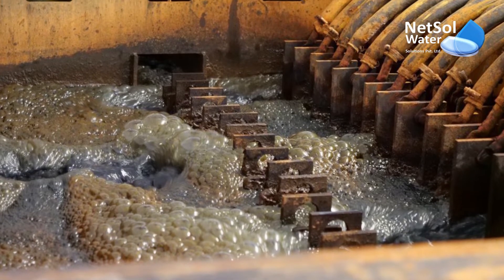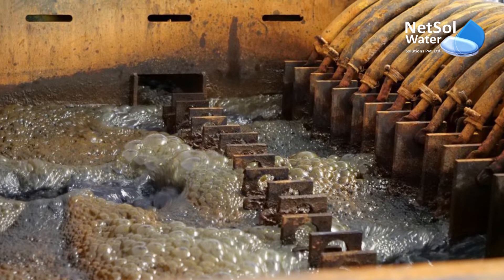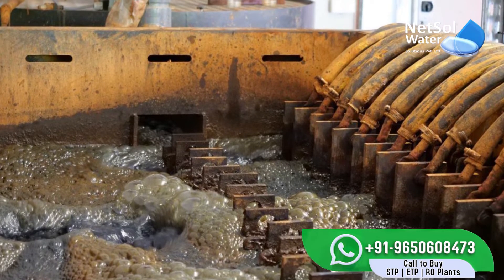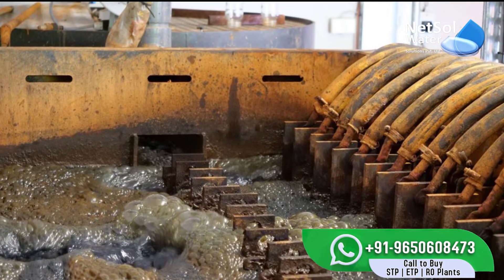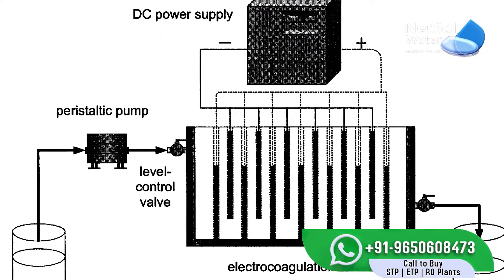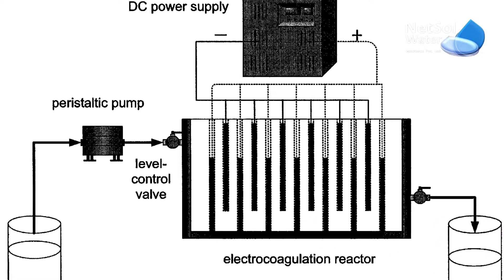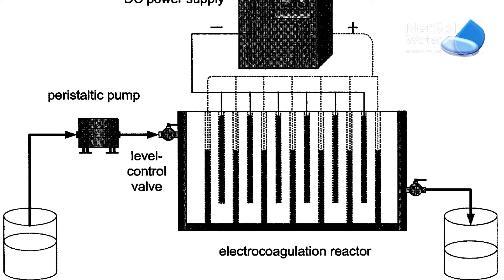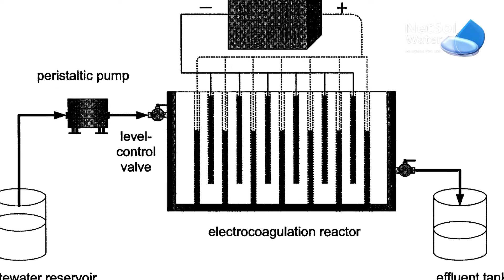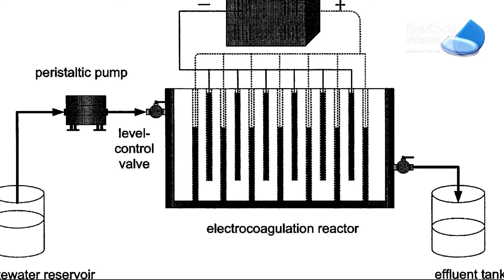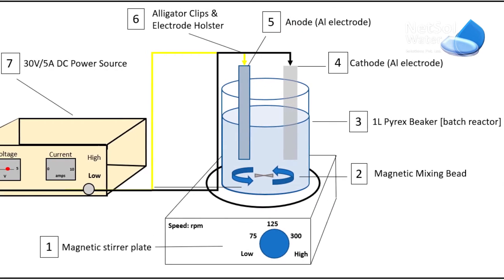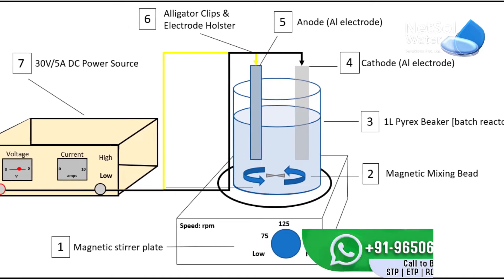Hello everyone. I am from Heta Water Solutions and today we will discuss an amazing technology which we use in our wastewater treatment unit — that is the process of electrocoagulation. Are you aware of the electrocoagulation process? It is a wastewater treatment process that entails the operation of a low voltage direct electric current and metallic electrodes, commonly aluminum or iron, to destabilize water pollutants that are already suspended, emulsified, or dissolved.